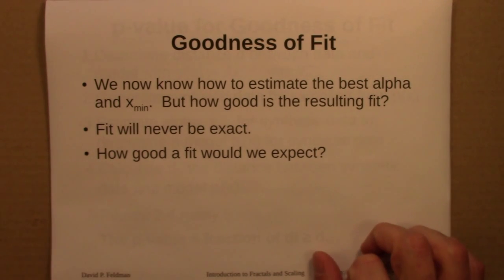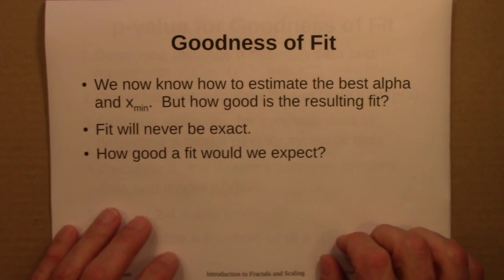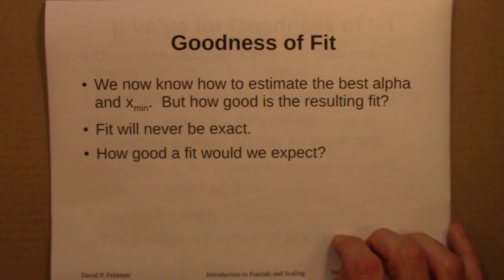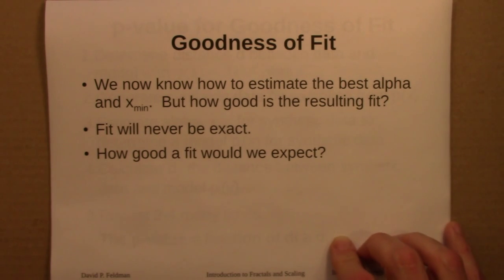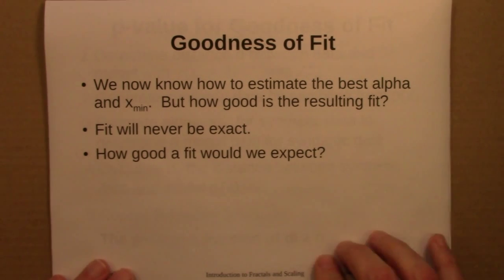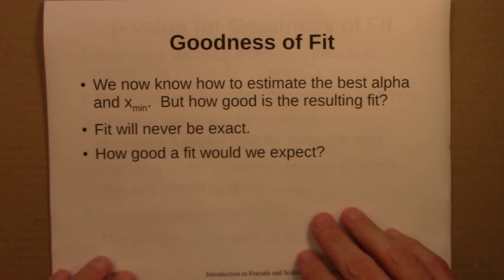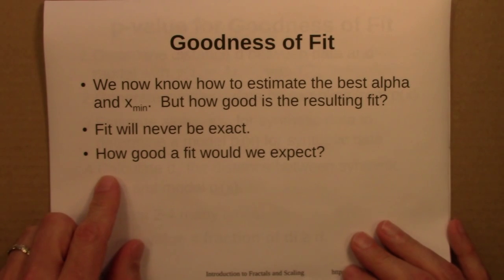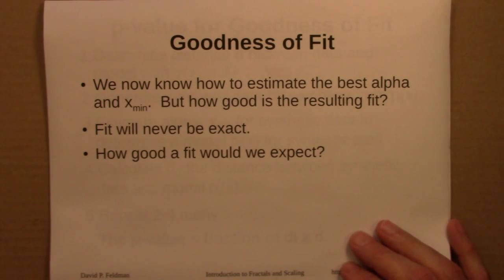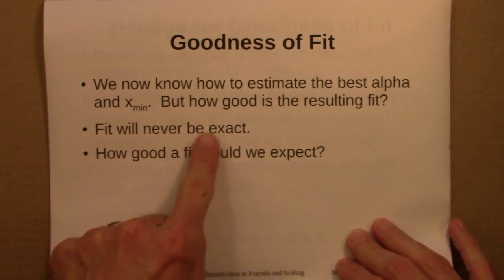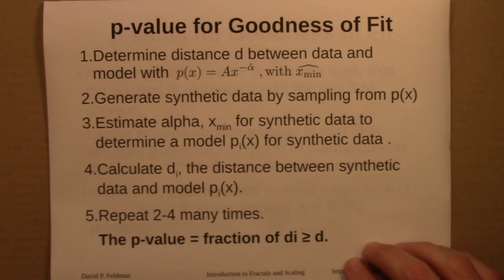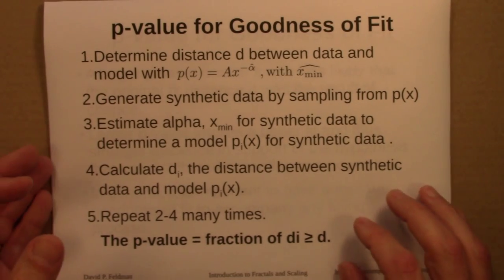Now we know how to estimate alpha and xmin — the best values possible. But how good is the best? Maybe the best fit still isn't very good. Fitting to power laws is hard given the large range of values involved. So we need a measure of goodness of fit, which leads to the idea of a p-value.